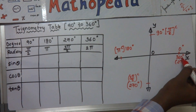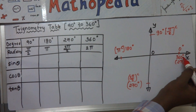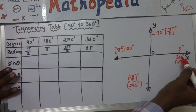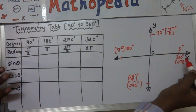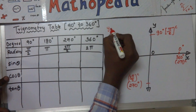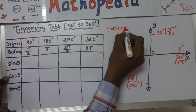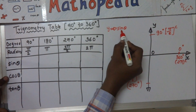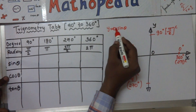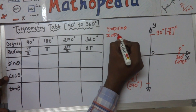Now let us start with the first trigonometric ratio, sine theta. To remember the values of sine theta and cos theta, just remember that the values of sine theta are always related to the y-axis, and the values of cos theta are related to the x-axis.